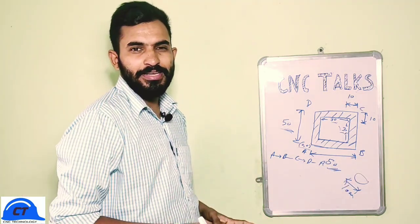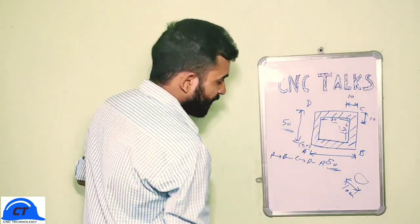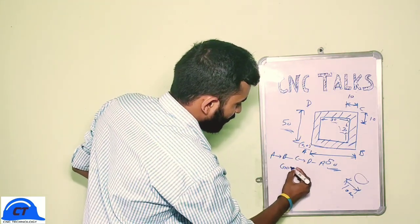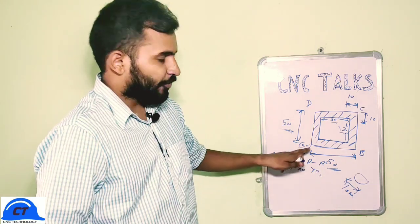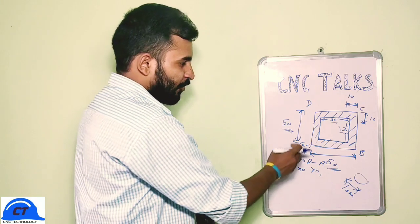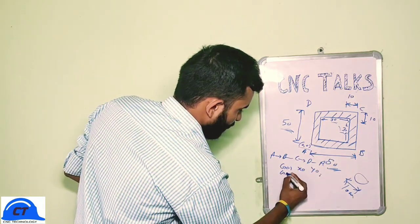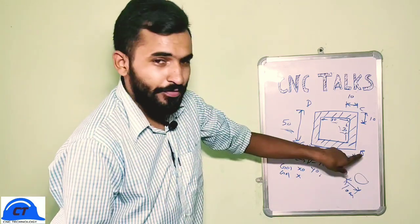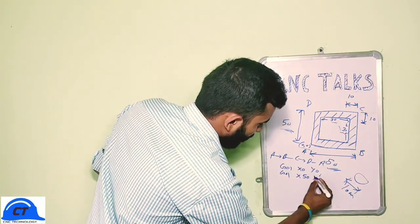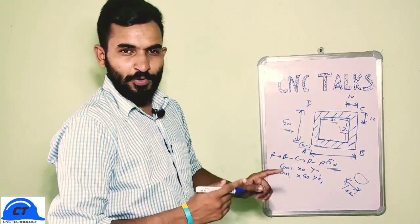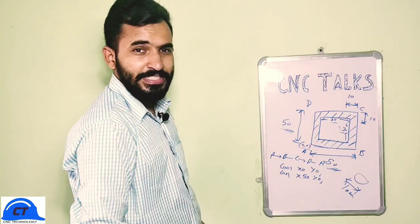Now let's define a simple tool movement. From point A our tool is at G01, X0, Y0. Now we'll move our tool from A to B, so the coordinates of point B will be X50 and Y0. From point B our tool will move to C, so the coordinates of point C will be X50 and Y50.